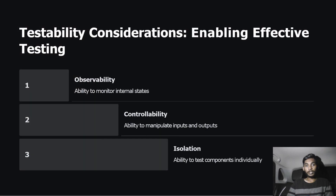Testability considerations — enabling effective testing. Observability: ability to observe internal state. Controllability: ability to manipulate inputs and outputs. Isolation: ability to test components individually.